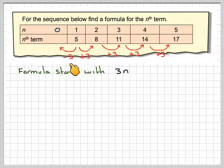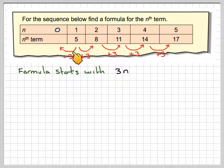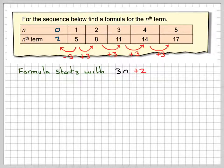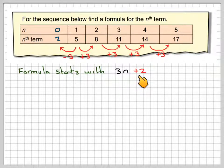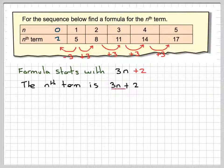Instead of adding 3, go back 3, and we have a 0 term. And if I take away 3 from 5, I get 2. And therefore, my formula will become 3n plus 2. So, we'll say the nth term is 3n plus 2.